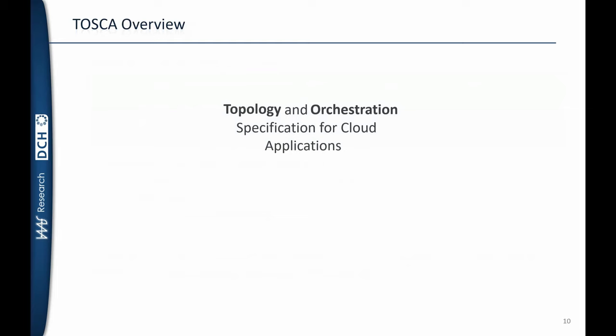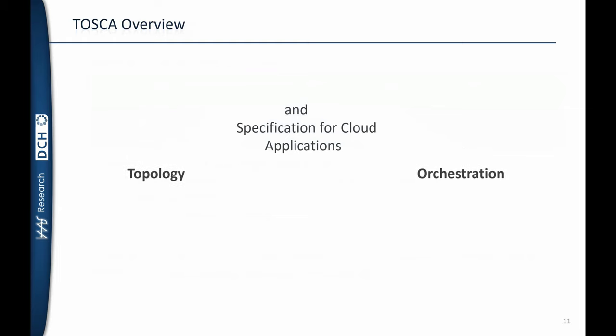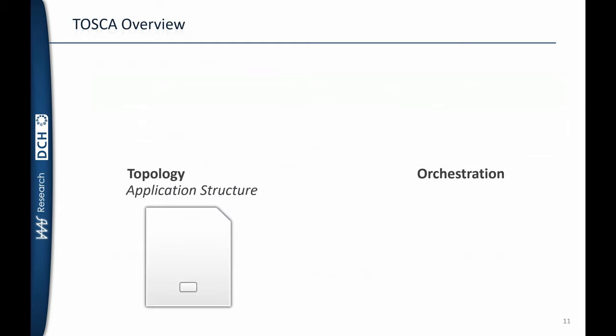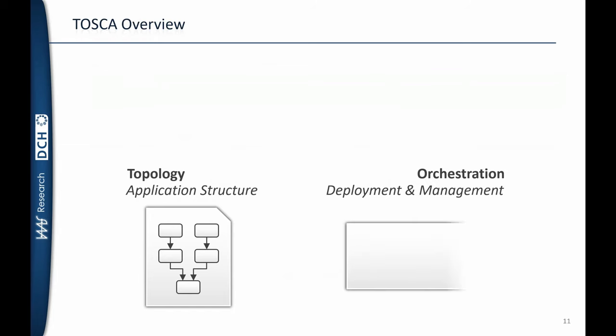In general, TOSCA consists of two parts: the topology and the orchestration. While the topology describes the application structure with its components and their relations, the orchestration describes the management and deployment of the application.